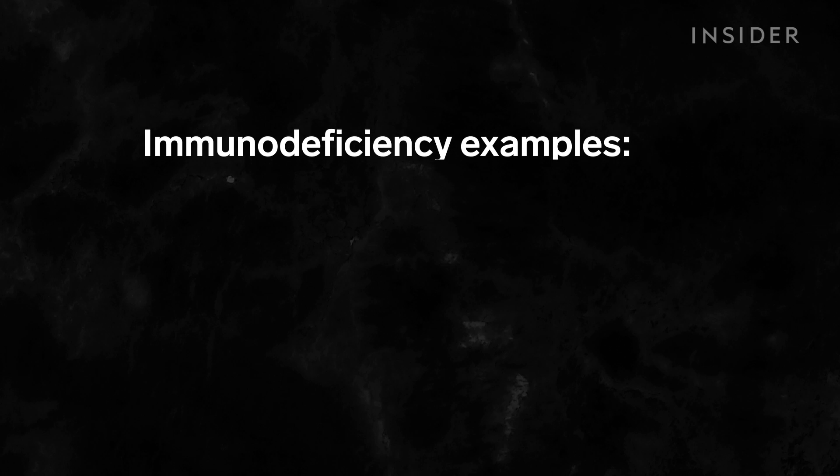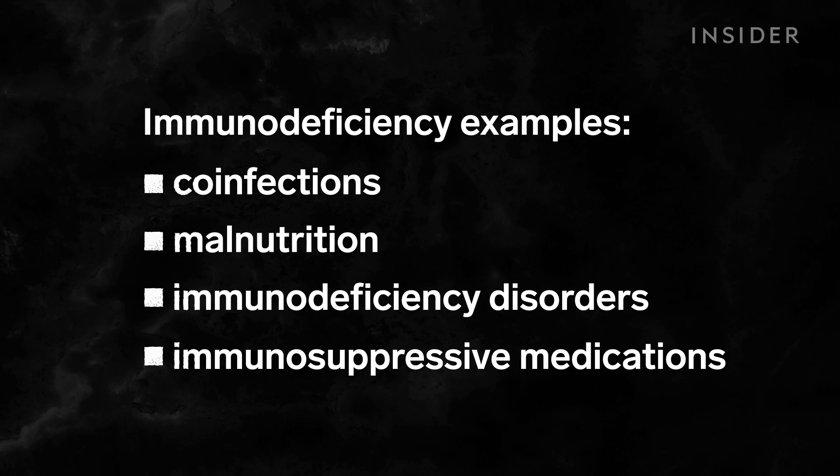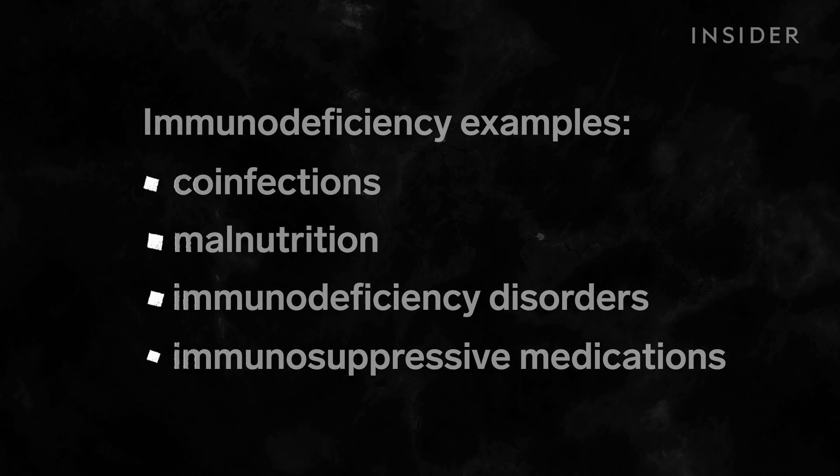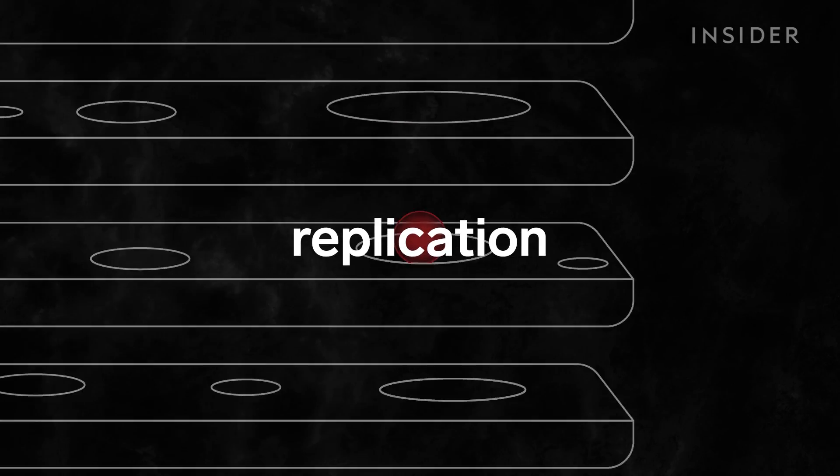And immunodeficiencies in either type of response can make it even easier for a virus to take hold. So, if a virus gets through all that, contact, infection, replication, then it has successfully spilled over.